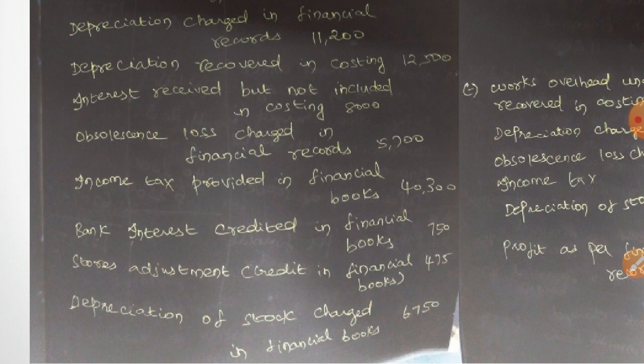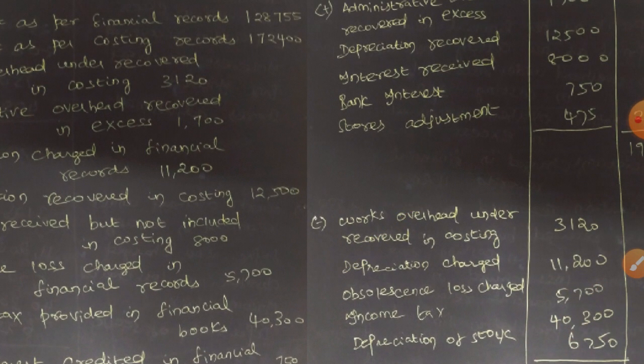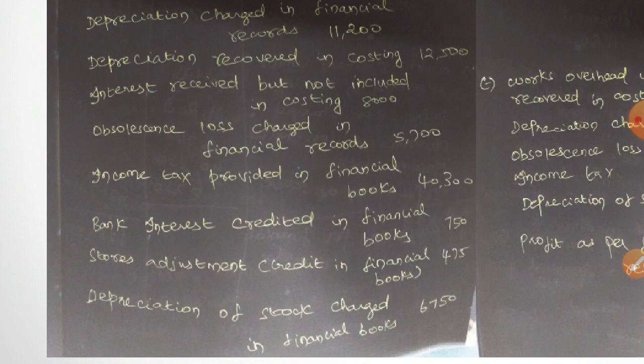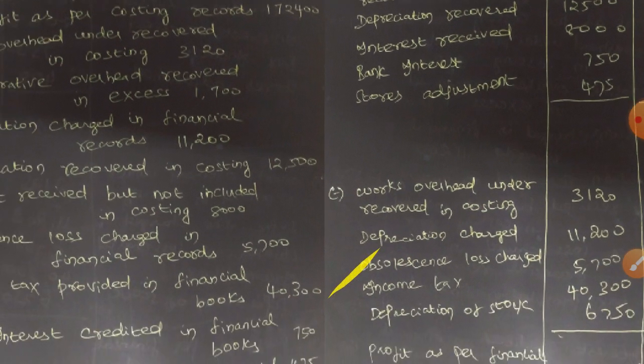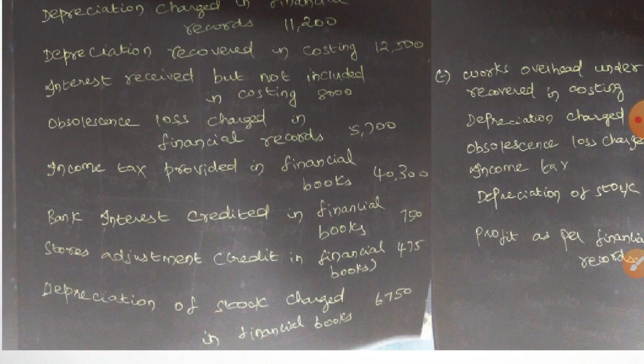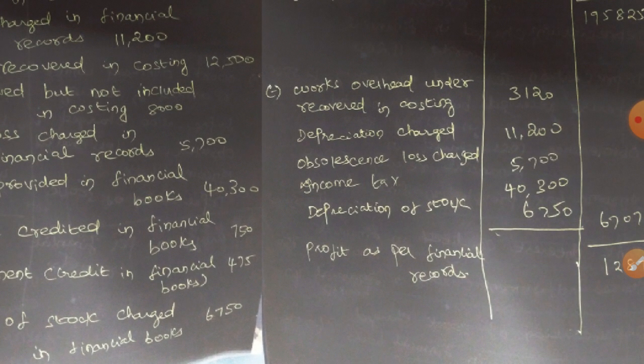Bank interest credited in financial books: 750. Even if it is in the financial books, it will be updated in the cost books as well, so bank interest 750 is added. Stores adjustment credit in financial books: 475 — credit is positive, so 475 is added. Finally, depreciation of stock charged in financial books: 6,750 — charged is an expenditure, so 6,750 is deducted.